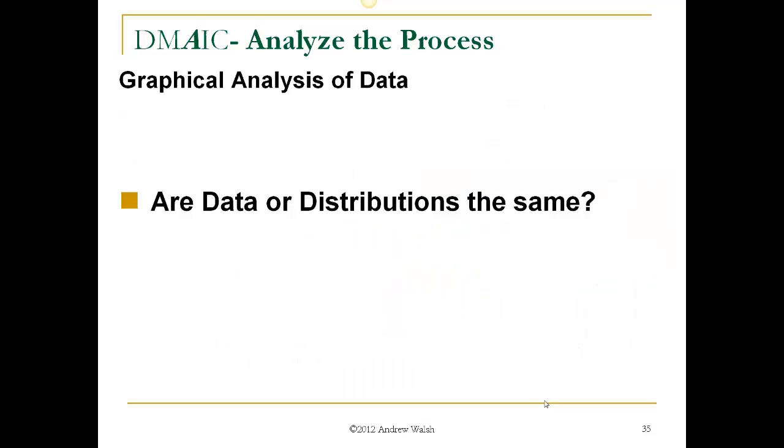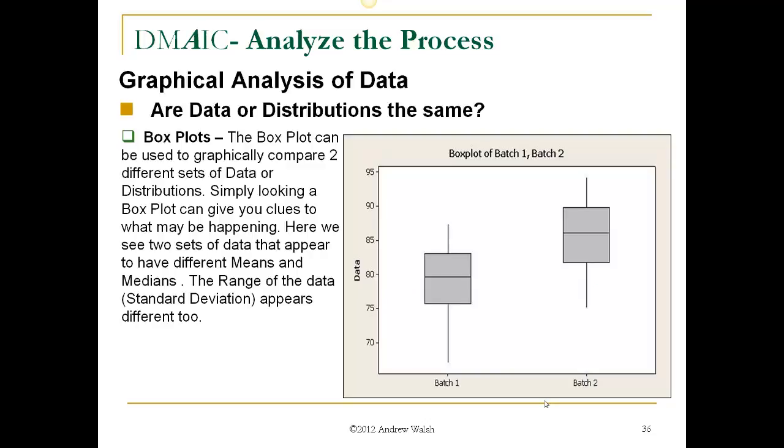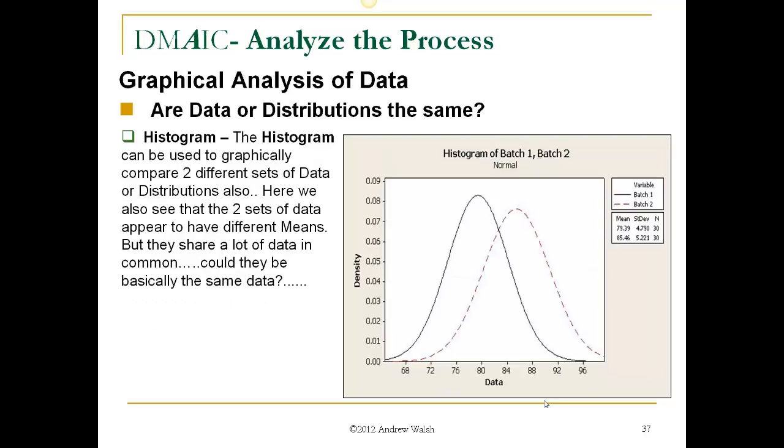Now, are data or distributions the same? The box plot can be used to graphically compare two different sets of data or distributions. Simply looking at a box plot can give you clues to what may be happening. Here we see two sets of data that appear to have different means and medians. The range of the data, standard deviation that is, appears different too. And if we look at the histograms, the histograms can be used to graphically compare two different sets of data or distributions also. Here we see that the two sets of data appear to have different means, but they share a lot of data in common. Could they be basically the same data?